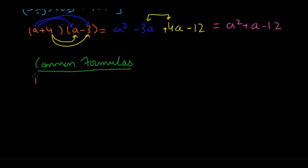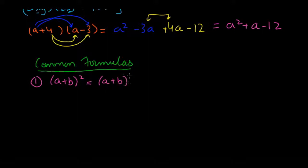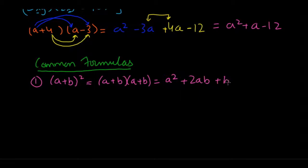The first one is (a + b) squared, which is just shorthand for (a + b) times (a + b). If you expand this out and add the middle terms, what you'll get is a squared plus 2ab plus b squared. This is a very important formula for the GRE — you need to memorize it.